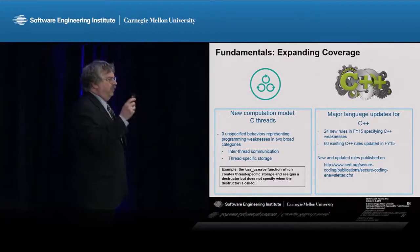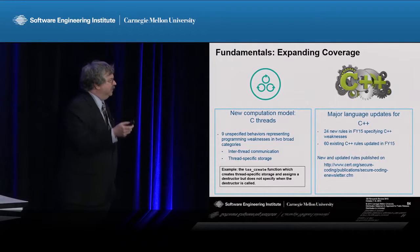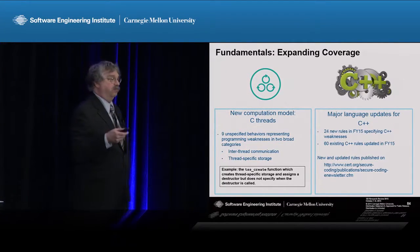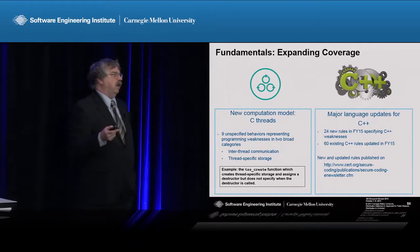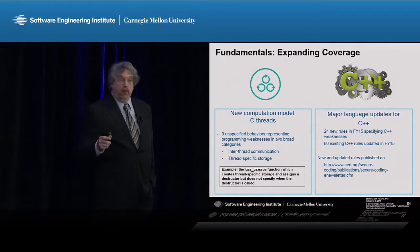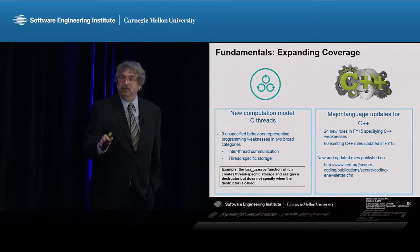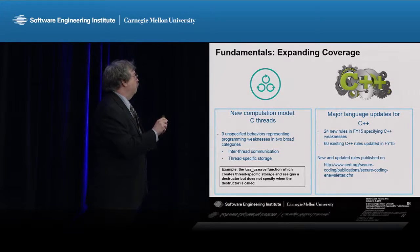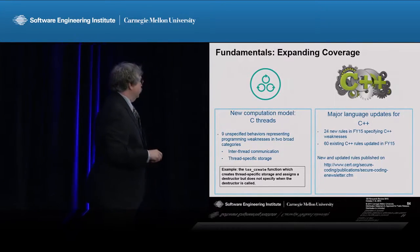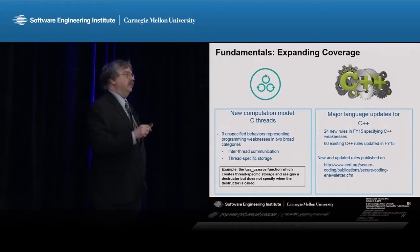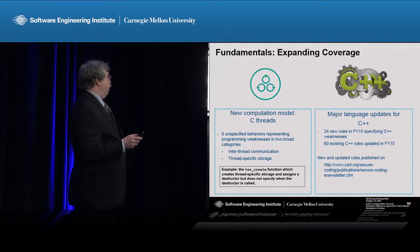C itself had some updates — about 30 or so rules had to be updated as the C language evolved in response to people's use of it. C also introduced another computation model: threads. The reason threads are important is because they are the way to efficiently program multi-core systems. Multi-core systems is effectively how architectures have evolved — it's a way to get more bang for the buck for the power. We found nine areas of pretty significant issues with threads that could lead to weaknesses and vulnerabilities with inter-thread communication and thread-specific storage.